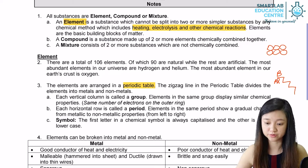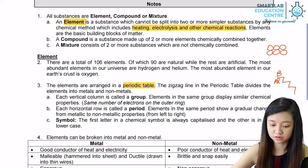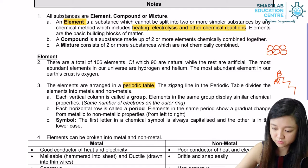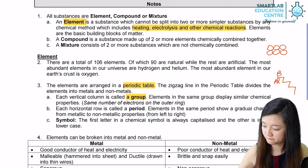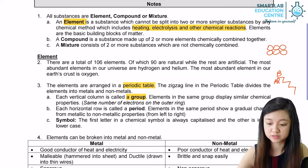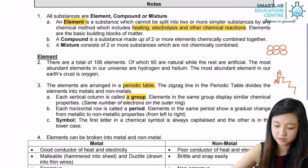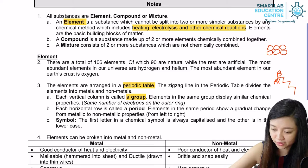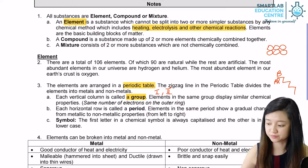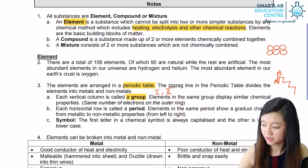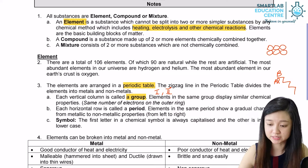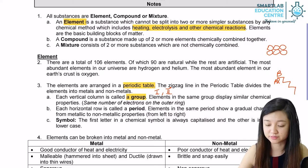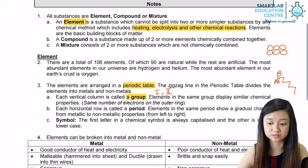Each vertical column in the periodic table is called a group. For the group number, it has to be written in Roman numerals — for example, Group I or Group II, etc. Elements in the same group will display similar chemical properties because they have the same number of electrons on the outermost shell.